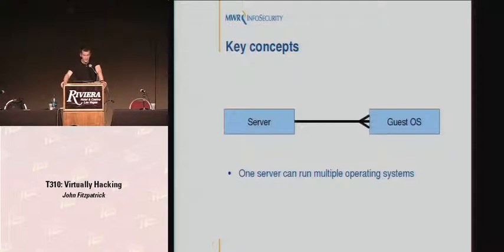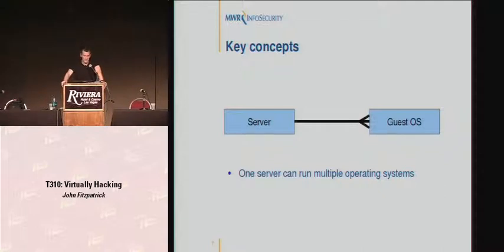The key concept with virtualization: you have one server which can run multiple guest operating systems. So essentially one piece of hardware can be many boxes on your network. With VMware's virtual infrastructure, this comes out more in a many-to-many relationship — perhaps you'll run multiple ESX boxes, each with multiple operating systems on it.